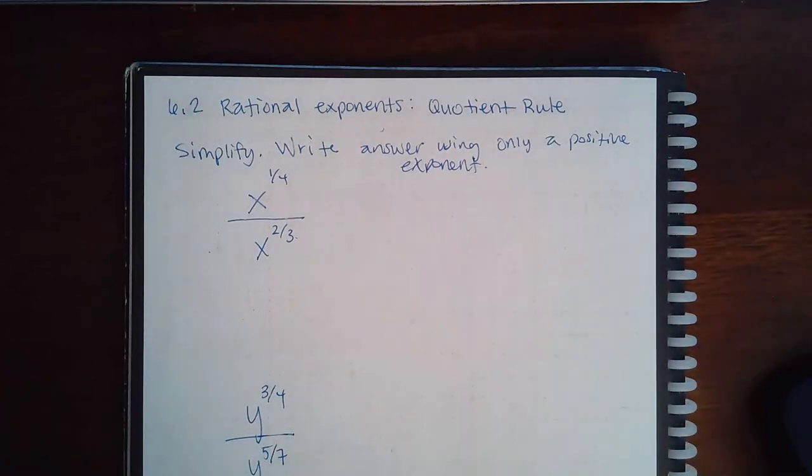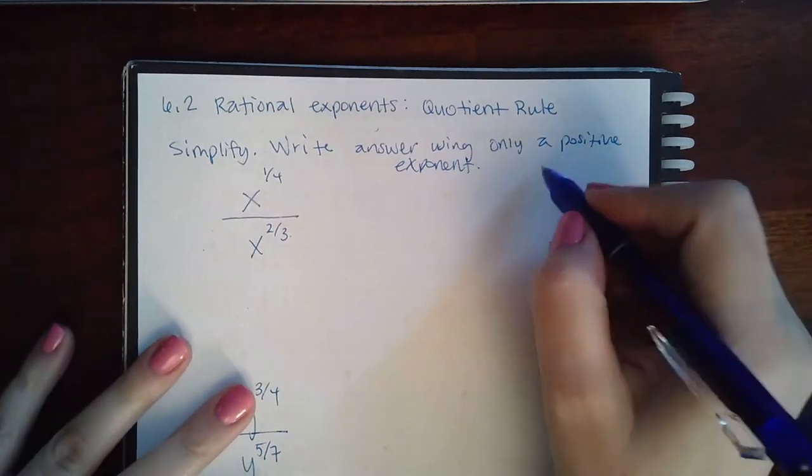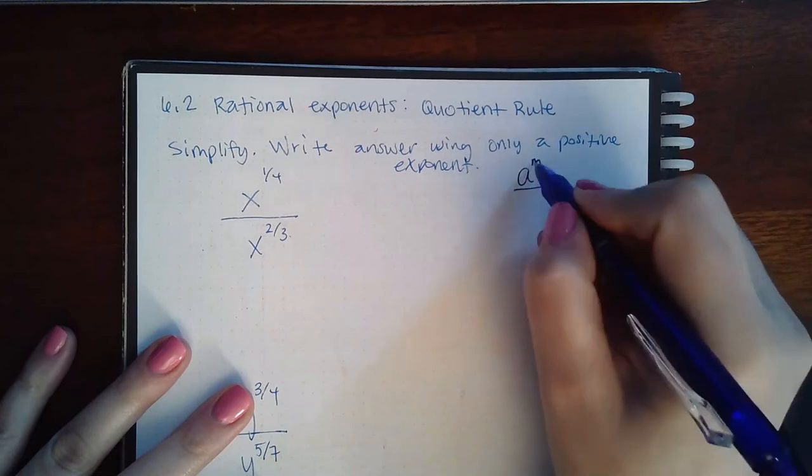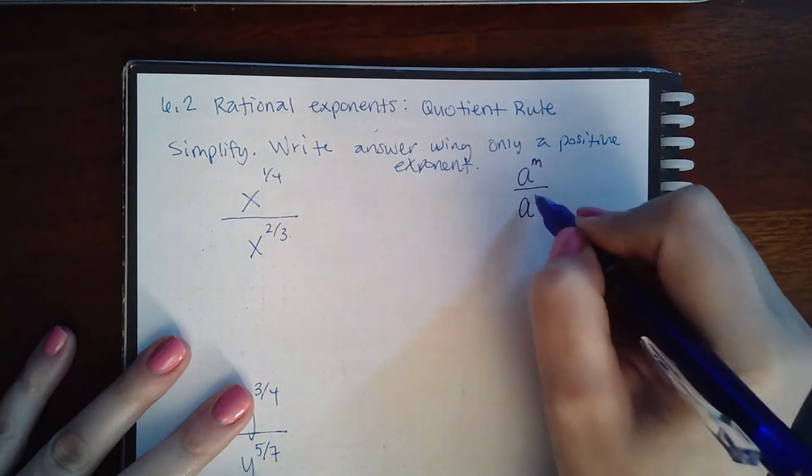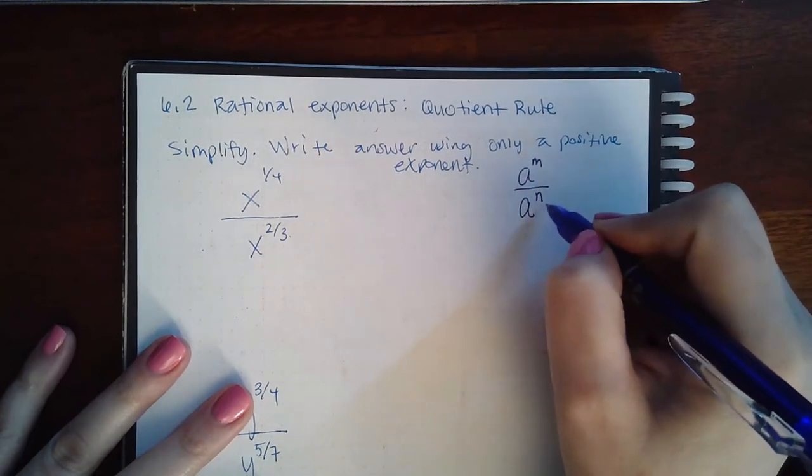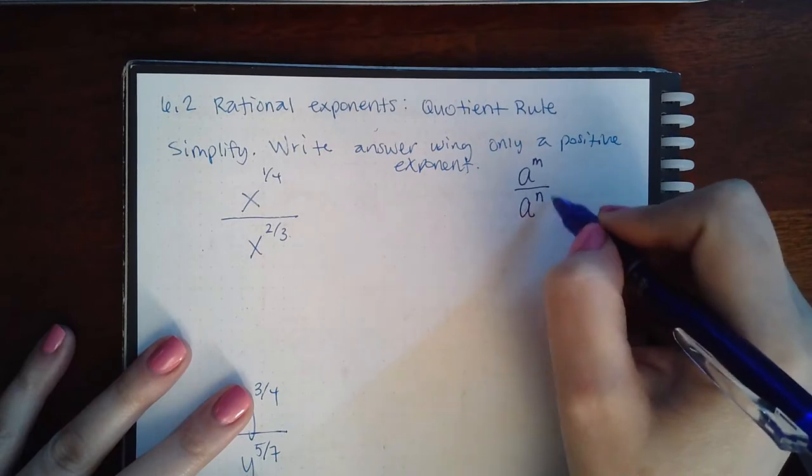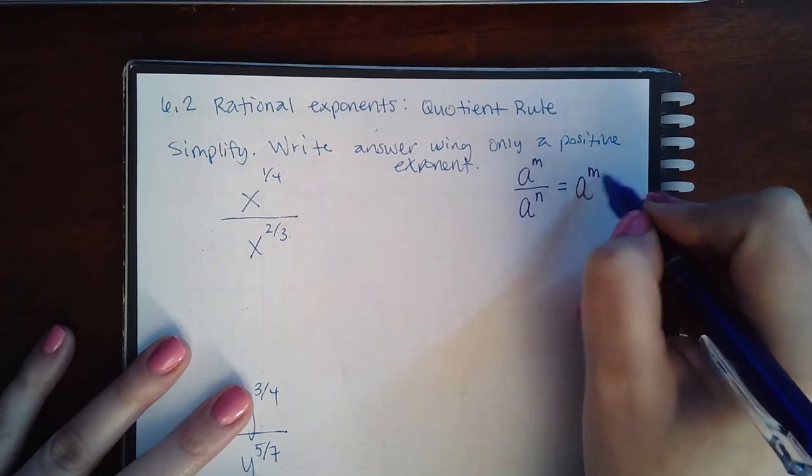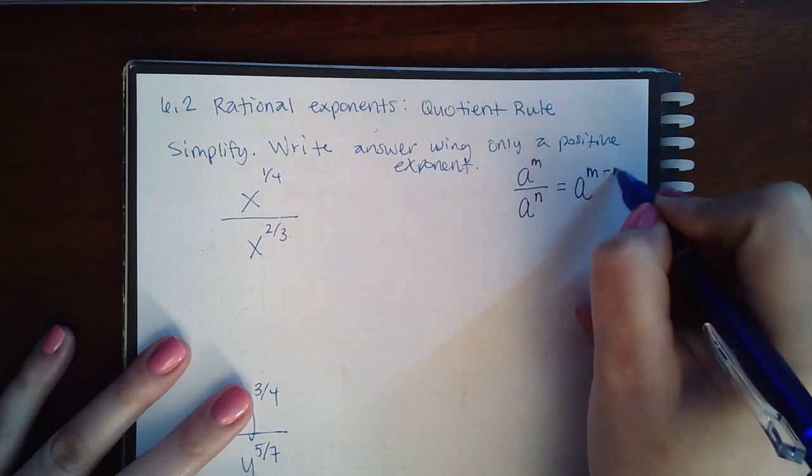Here we have 6.2 rational exponents, the quotient rule. So there is a rule for quotients. If you have a base with an exponent in the numerator, the same base maybe a different exponent, maybe the same exponent, but another exponent in the denominator, you can write that as a single base together.